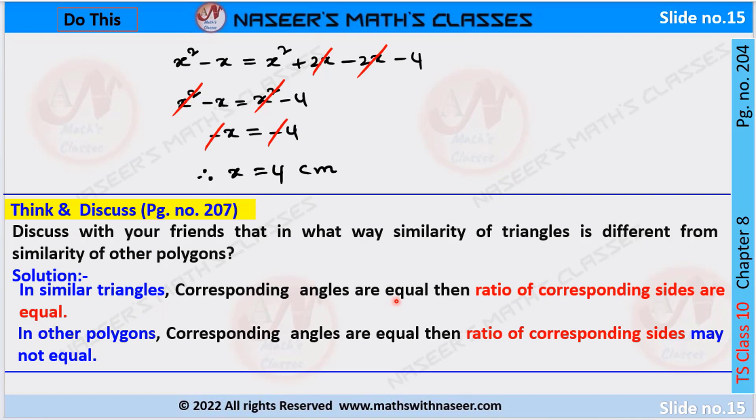In similar triangles, corresponding angles are equal then ratio of the corresponding sides are equal. In other polygons, corresponding angles are equal then ratio of corresponding sides may not be equal.